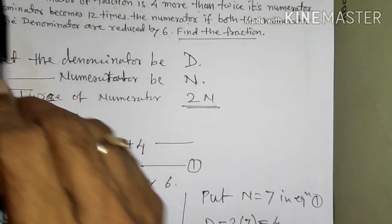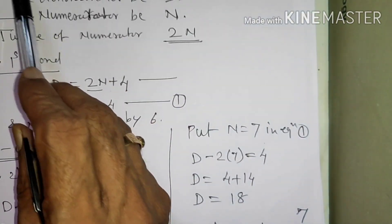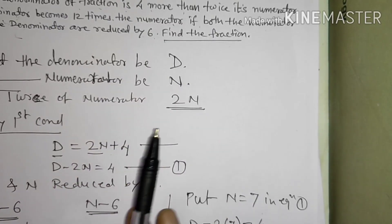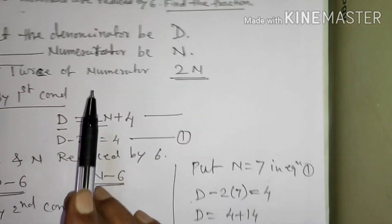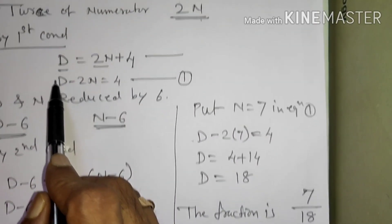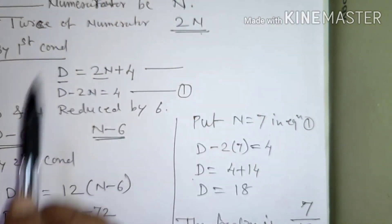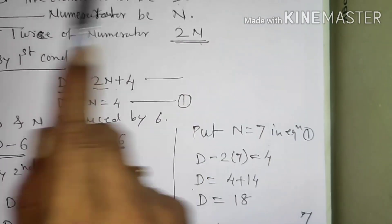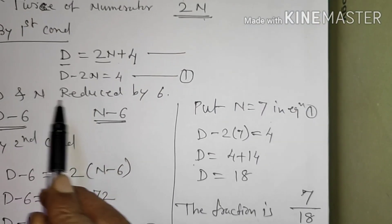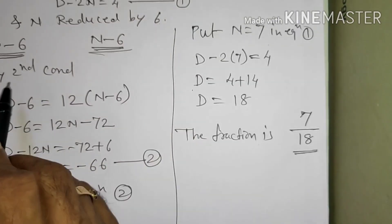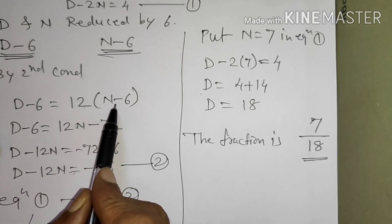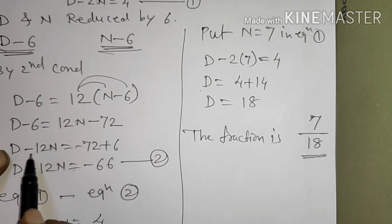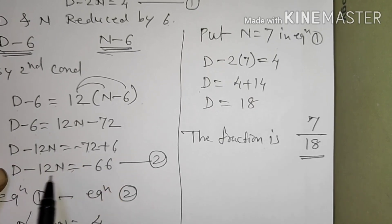Let us review: the denominator of a fraction is 4 more than twice its numerator; the denominator becomes 12 times the numerator if both are reduced by 6. We considered denominator D and numerator N, twice of numerator is 2N. By the first condition, D equals 2N plus 4. By the second condition, D minus 6 equals 12 into (N minus 6), giving D minus 12N equals minus 66.